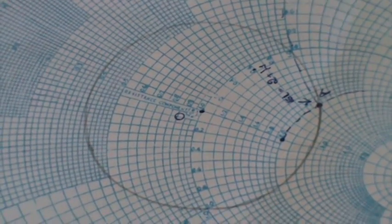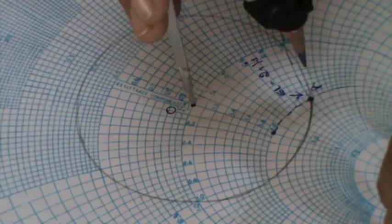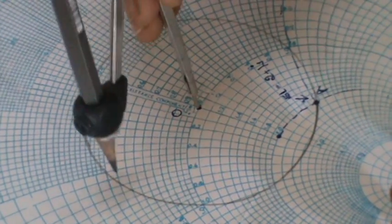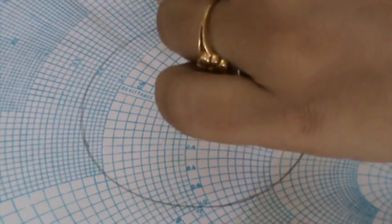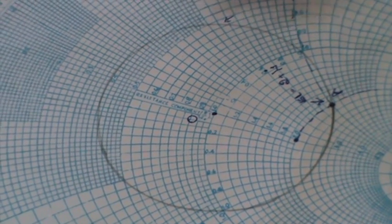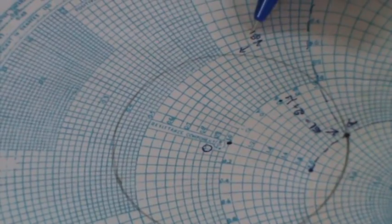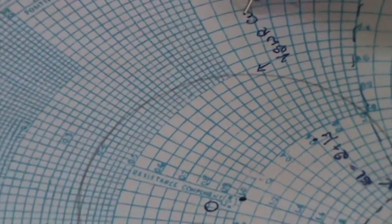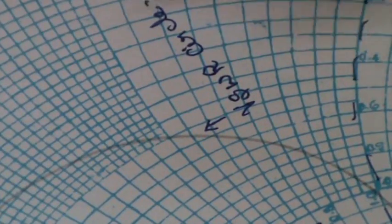Take a compass and take the radius as OA. Draw a complete circle by considering O as center and OA as radius. What does this circle called? This is called as VSWR circle.